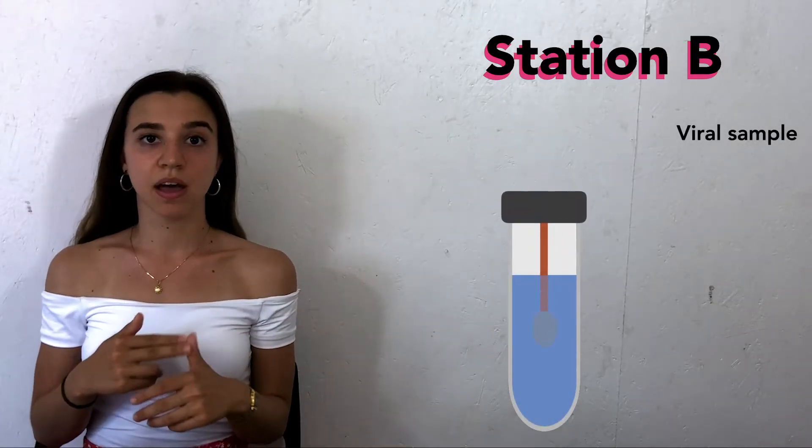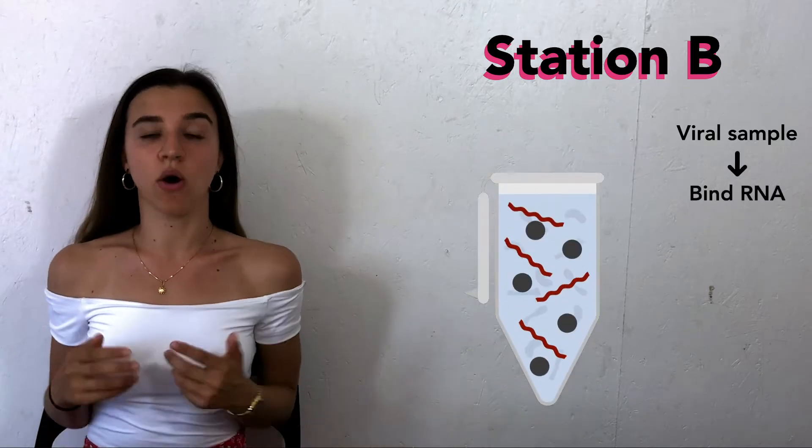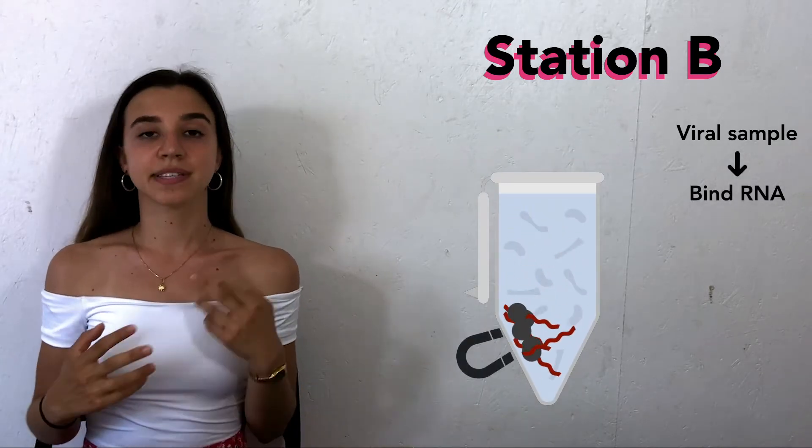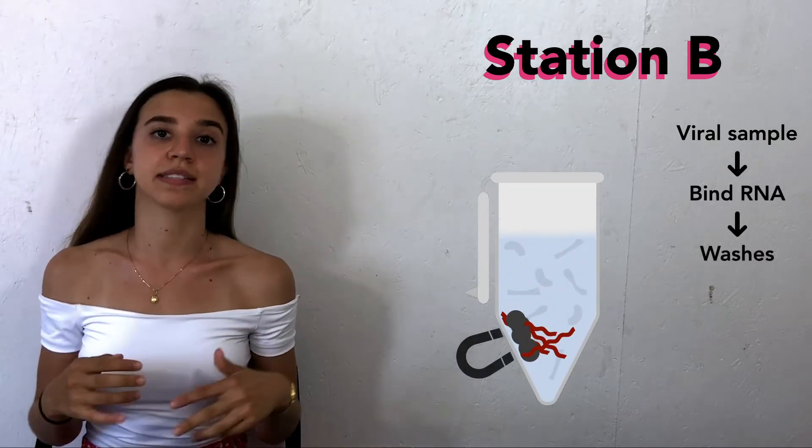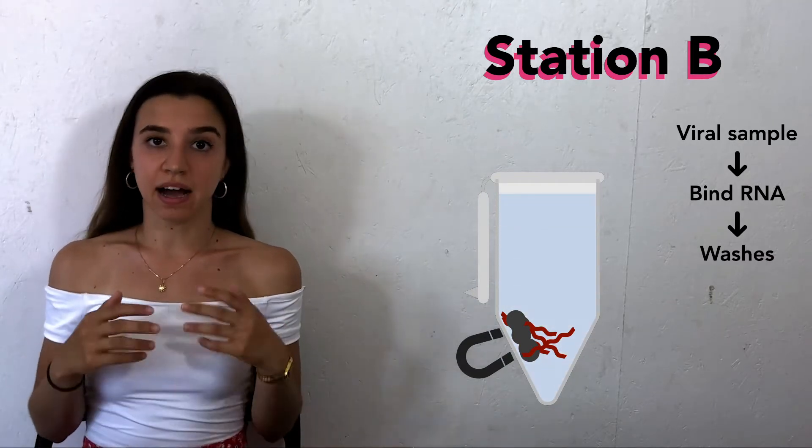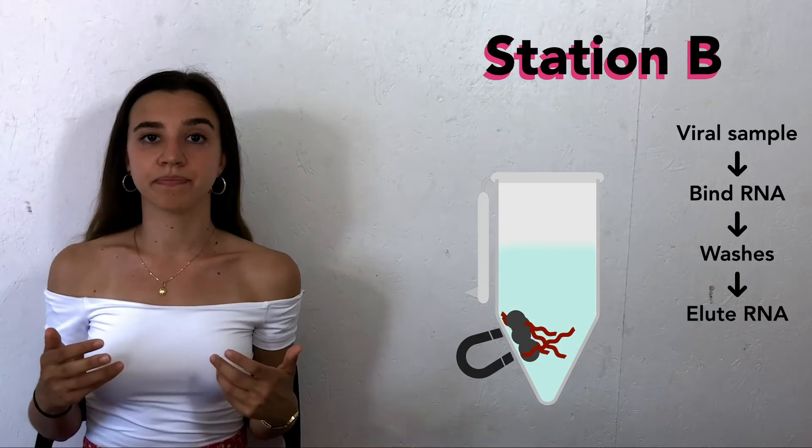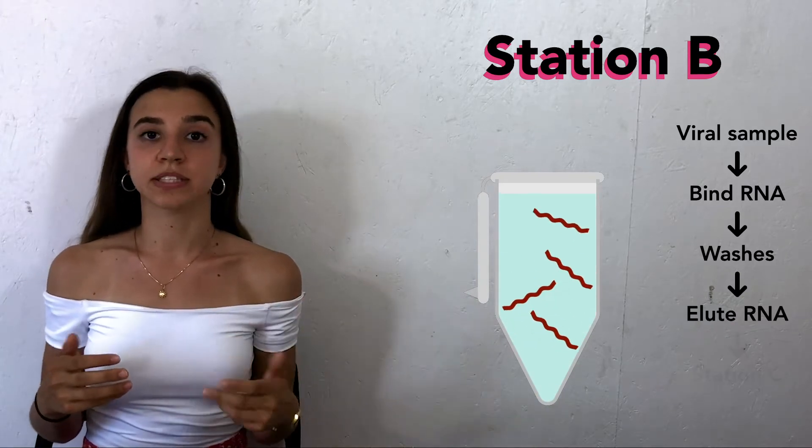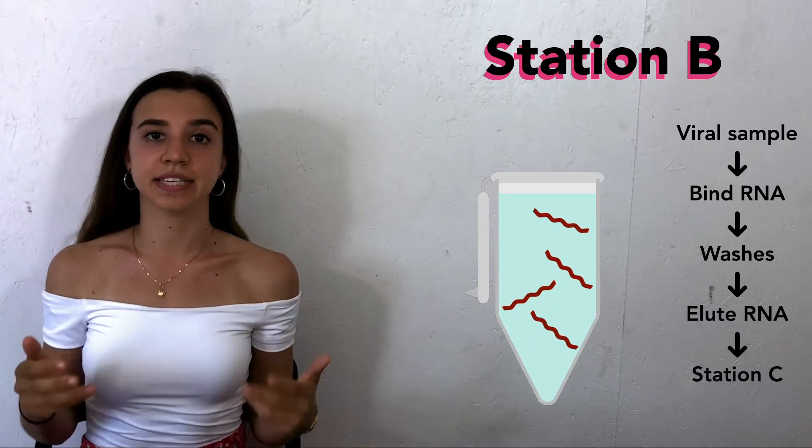The Station B protocol broadly aims to take a viral sample, bind the sample RNA onto magnetic beads, and use a series of washes to remove any cellular debris or contaminants. After this, the isolated RNA will be eluted, ready for reverse transcriptase qPCR in Station C.